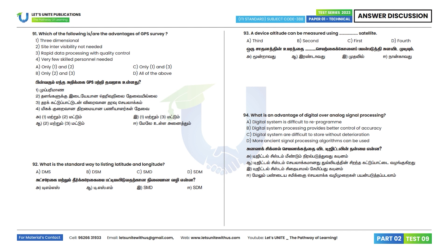Question 91: Which of the following is an advantage of GPS survey? Three-dimensional advantage, site intervisibility not needed, rapid data processing with quality control, and very few skilled personnel needed — all of the above are advantages. Option D is the correct answer.